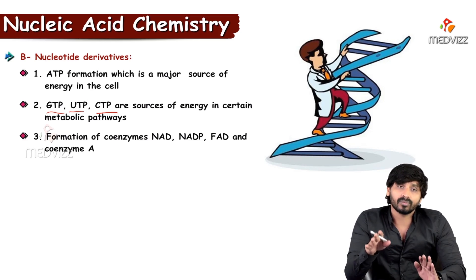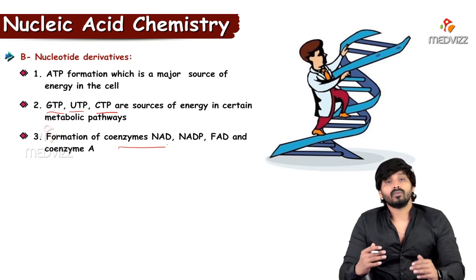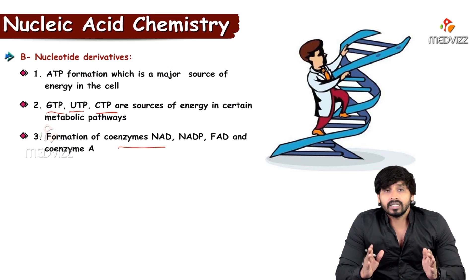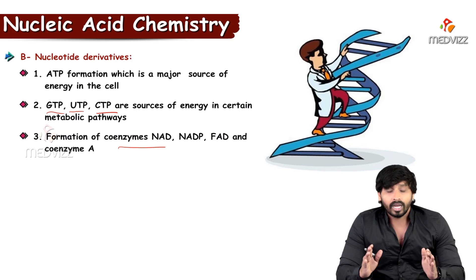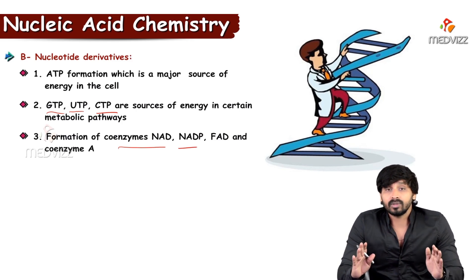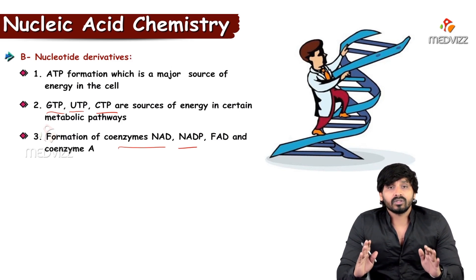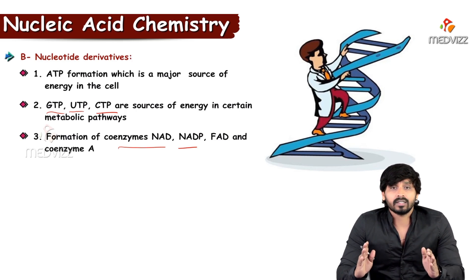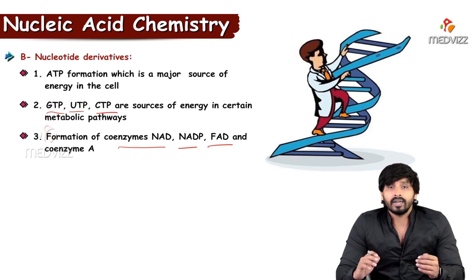Nucleotides also play a major role in the formation of coenzymes such as NAD and NADP. These are related to B-complex vitamin B3, niacin. Without these coenzymes, reducing equivalents cannot be carried to the electron transport chain — NAD and NADP are required to carry reducing equivalents.